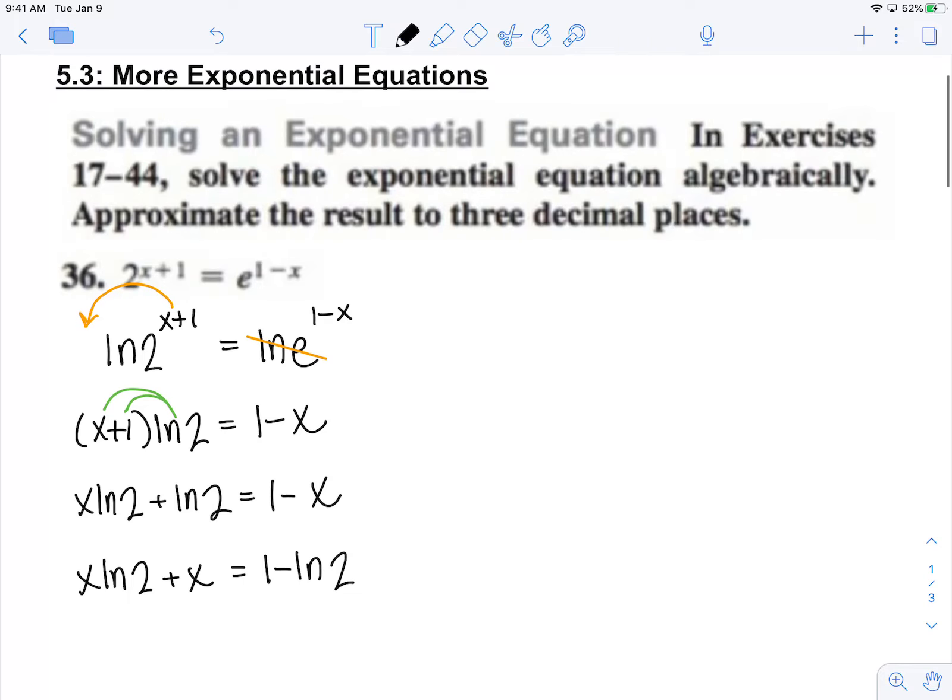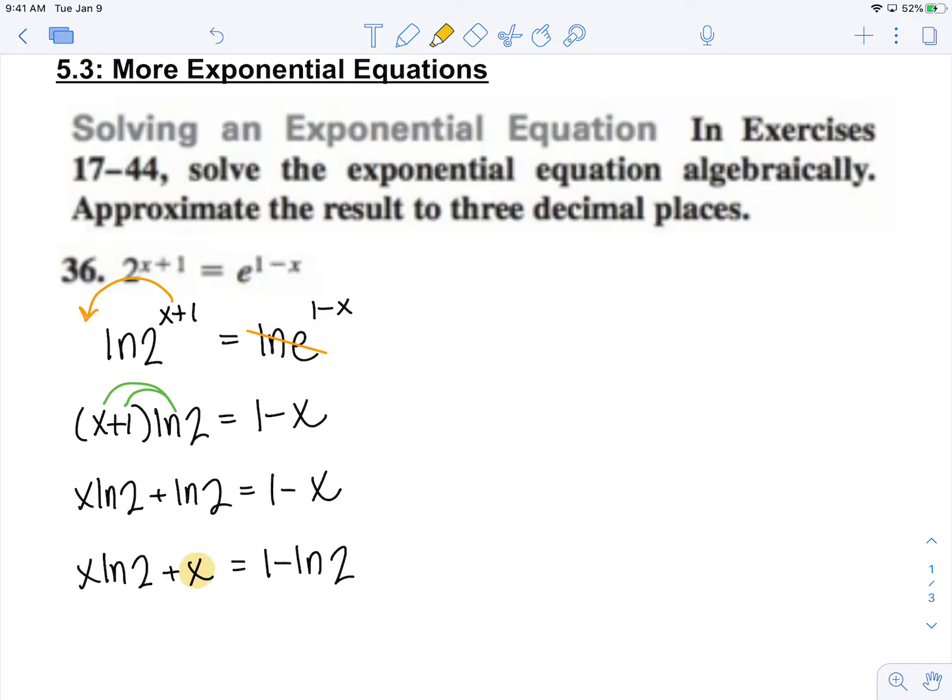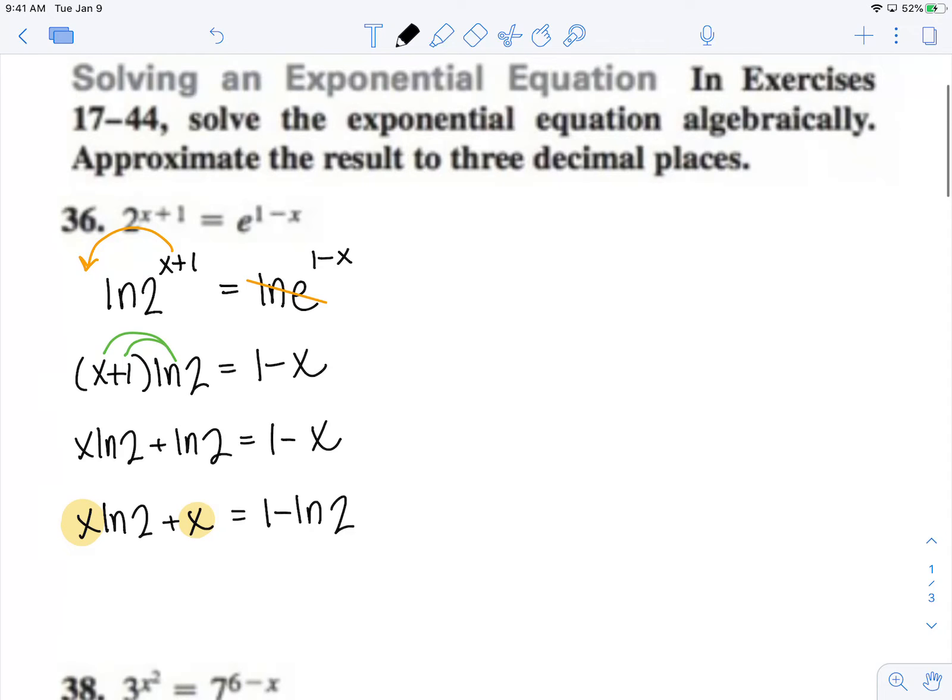Now what I can do on the left side since I'm solving for x, I see that there is a GCF of x on that left side. So I have x times ln 2 plus 1 equals 1 minus ln of 2.